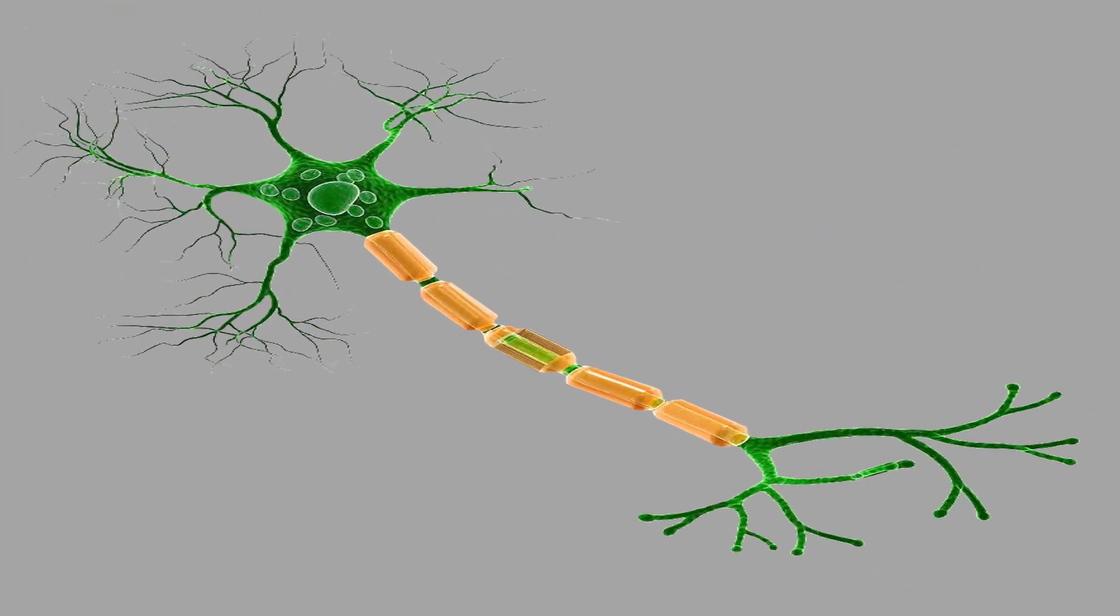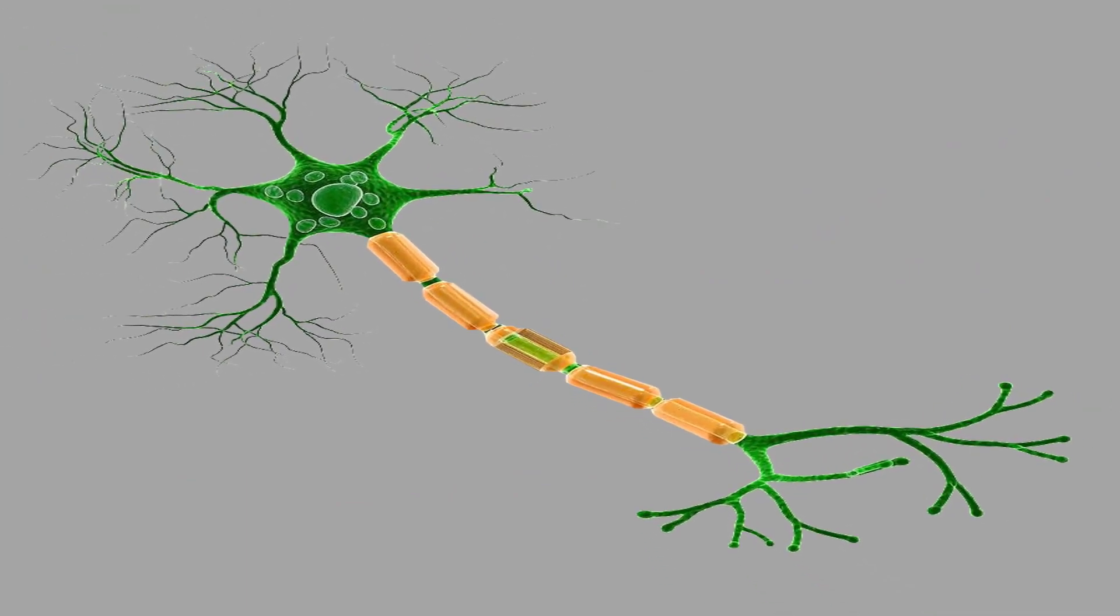Let us start by learning how a neuron looks like. The structure of a neuron varies upon its positioning in the body, but every neuron is made up of the three same parts: namely the cell body or the soma, the axon, and the dendrites.